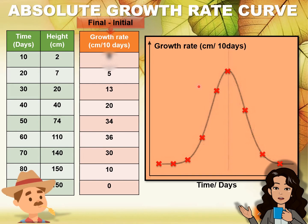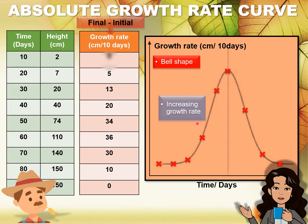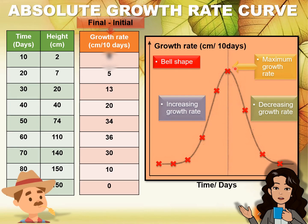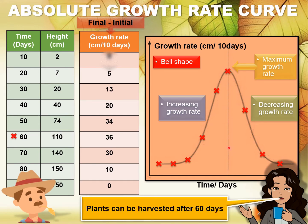Once we connect the dots, we will get a graph that has a bell shape. The bell shape graph can be divided into two halves. The first half shows an increasing growth rate, and the second half shows a decreasing growth rate. So the peak of the graph is the point where the plant grew the most. Beyond this point, the plant is not going to grow as tall anymore. The conclusion from that is that plants can be harvested after 60 days, because if you keep the plants longer than that, they are not going to be very productive. This is the advantage of the absolute growth rate curve — it can indicate when the plant had maximum growth.